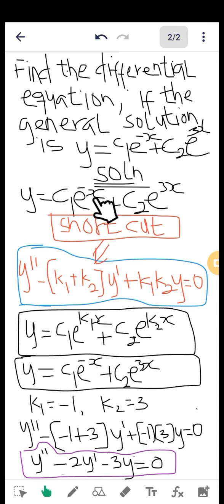We know that my x is here, hence my k1 will be -1. And also we know that my x is here, so my k2 will be 3. By comparison, I know that my k1 will be -1 and my k2 will be +3.